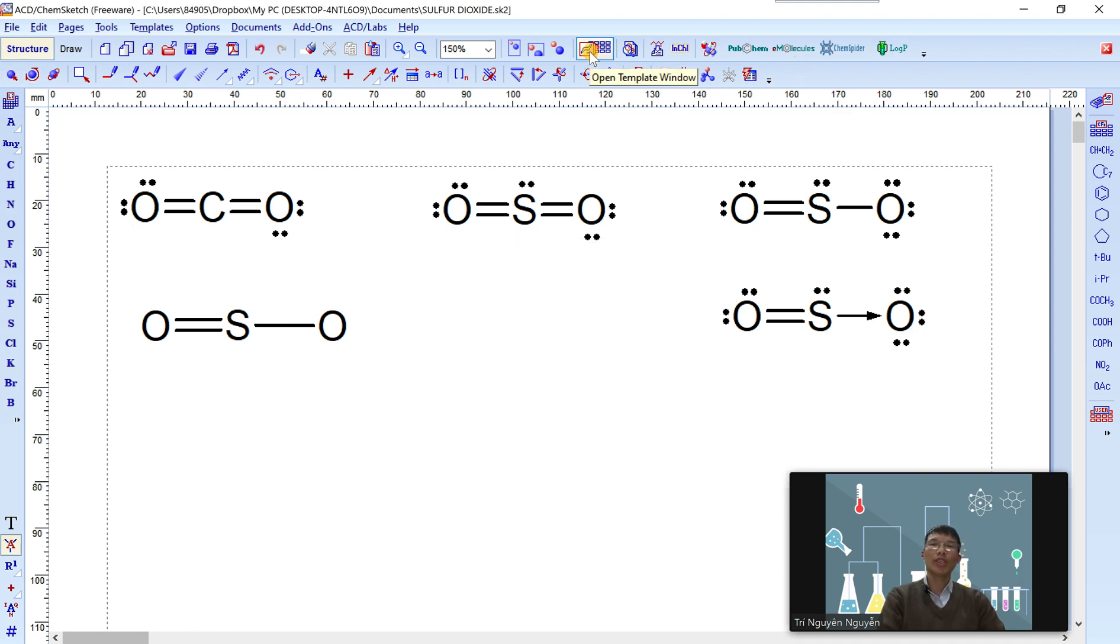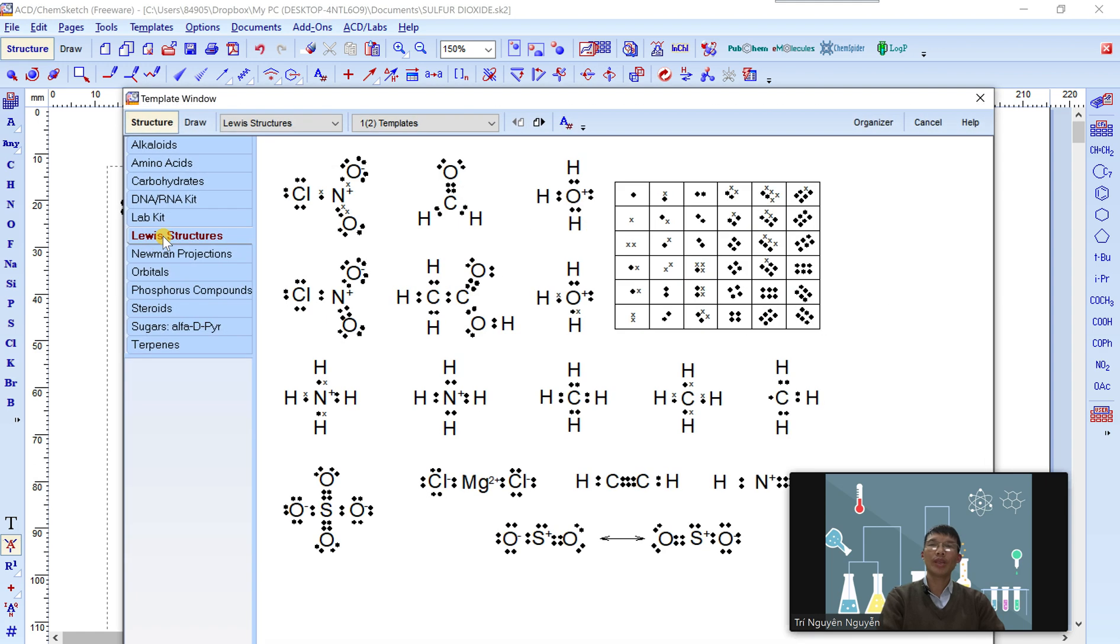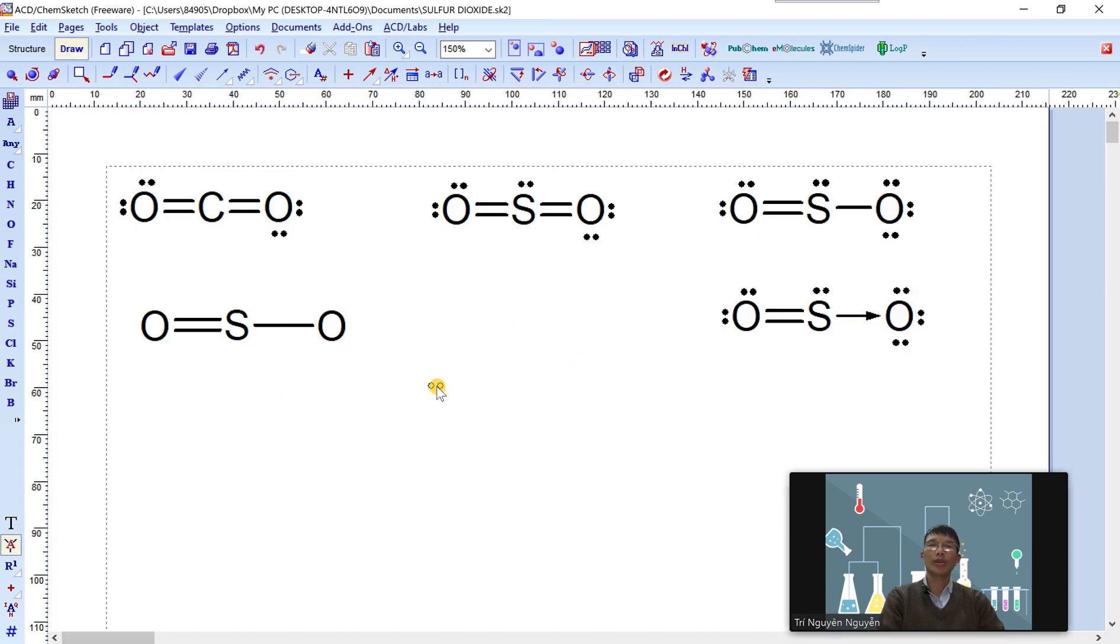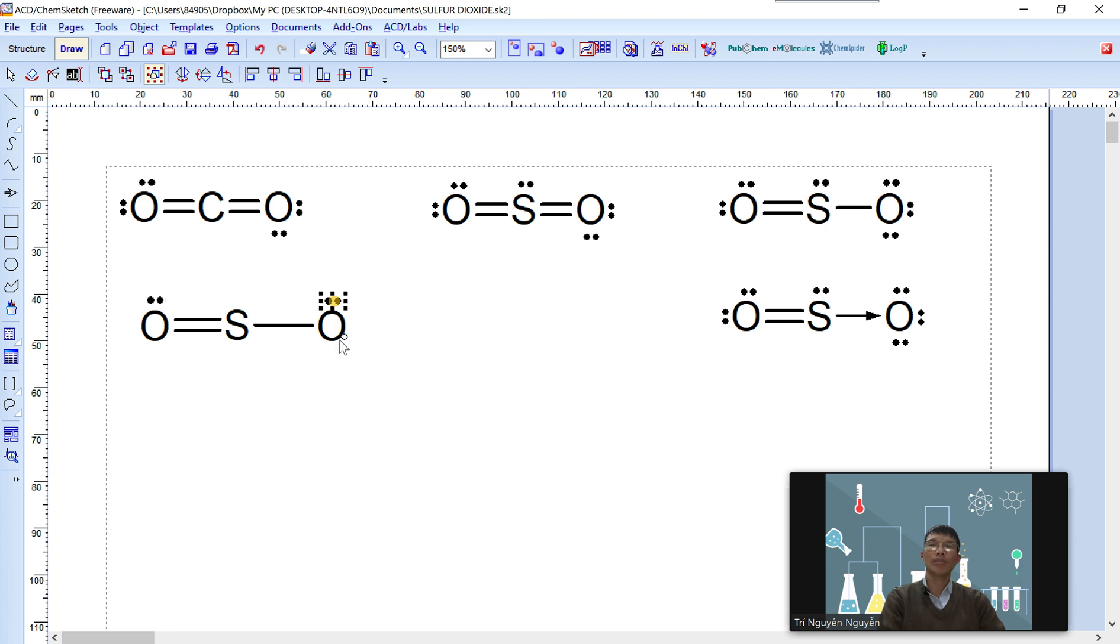Choose the Structure window and pick the electron pairs to add to oxygen. Option atom, atom, and sulfur atom.